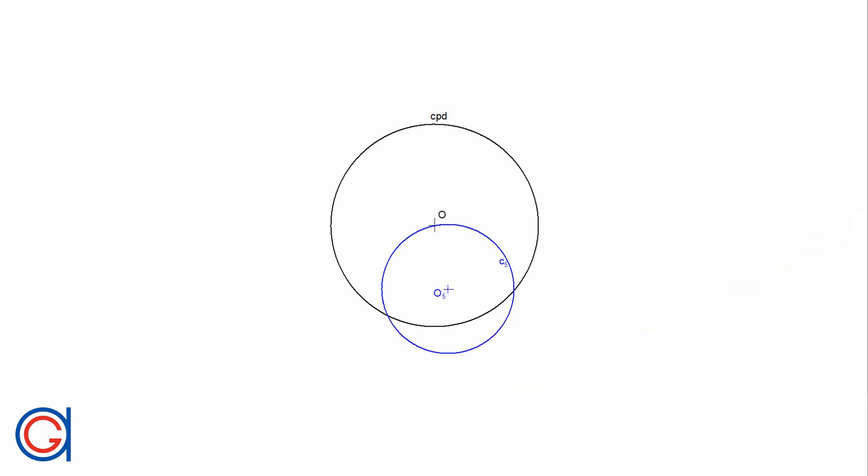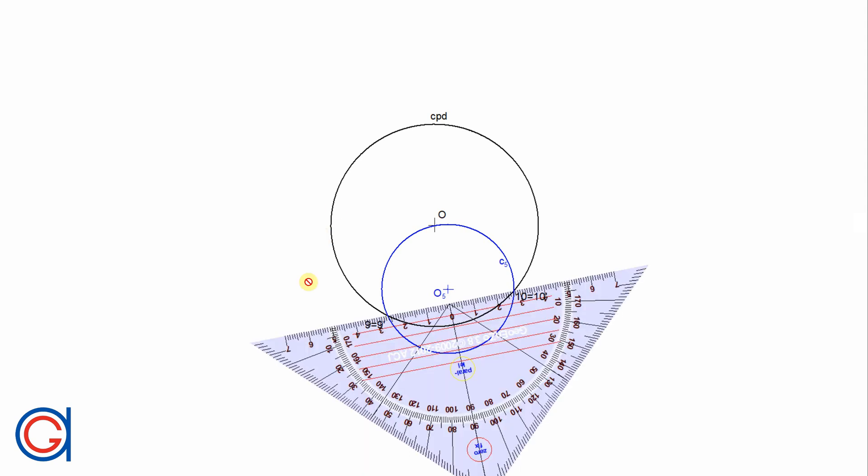Finally, circumference C5 intersects the reference circle and passes through its origin O. The inverse C5 prime is a straight line passing through the intersection points 9 and 10, highlighted in red dots. We simply join these points with a thicker red line.